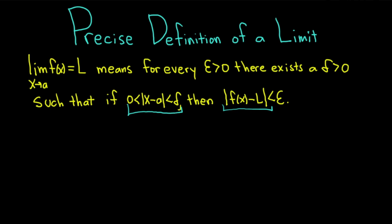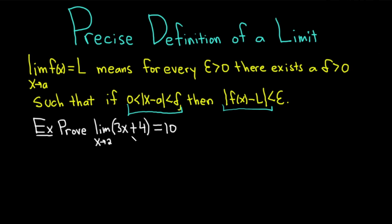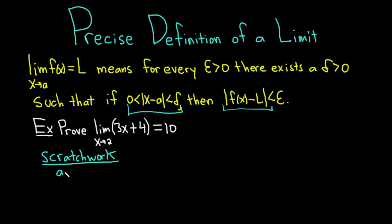Let's go ahead and do a careful example where we carefully use this definition to prove a limit exists and is equal to a certain number. We're going to prove that the limit of 3x plus 4 as x approaches 2 is equal to 10. We're going to do this in two parts. First, we're going to figure out how to prove it — let's call that the scratch work. And then we're going to actually write the proof. In our particular case, a is equal to 2, f of x is 3x plus 4, and our l is 10.